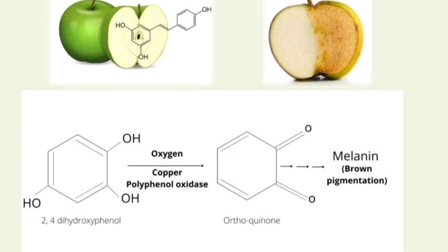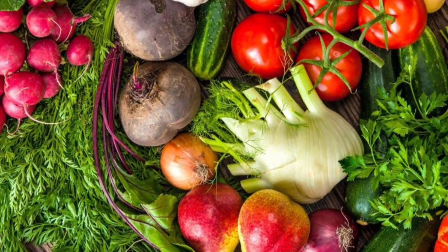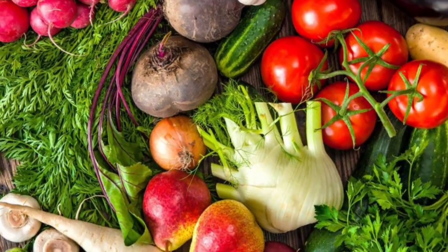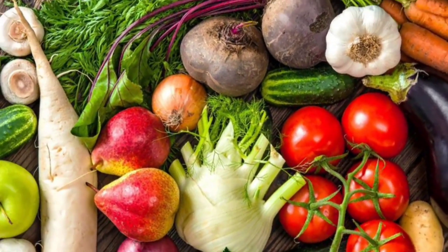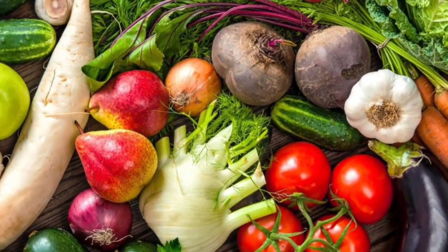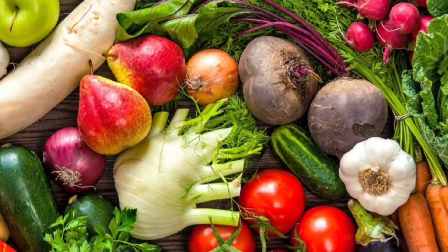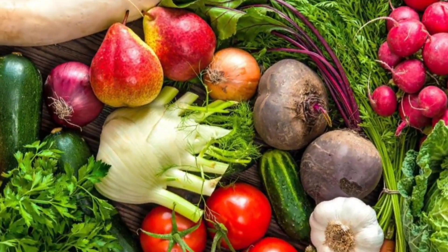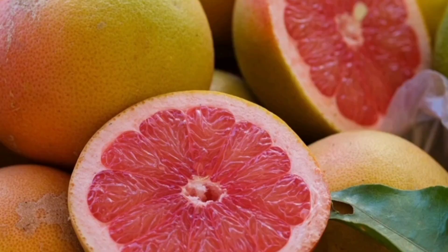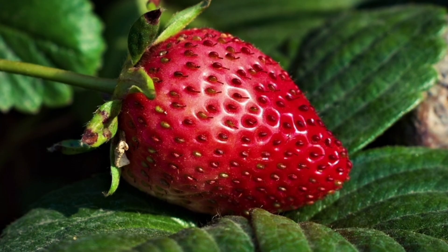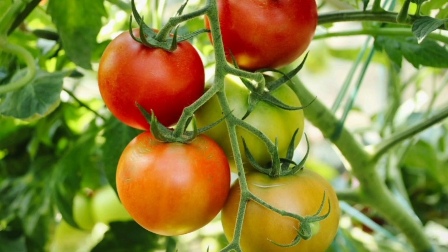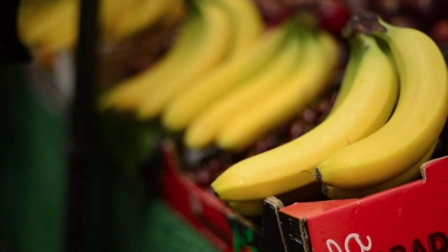When the substrate is a phenol, it is first converted by hydroxylation into ortho-diphenol, and then oxidized to ortho-quinone. Some fruits do not contain these enzymes and do not darken on exposure of cut surfaces to air — for example, orange, lemon, grapefruit, strawberry, and tomato. They seem to be free from these enzymes.